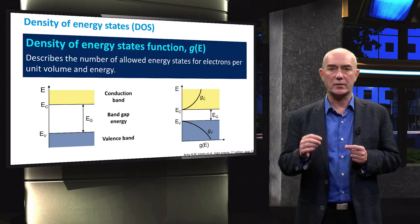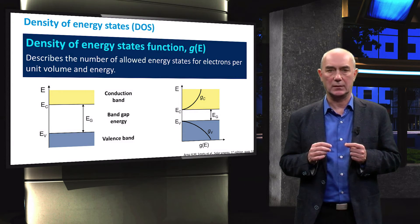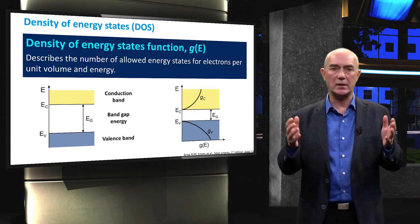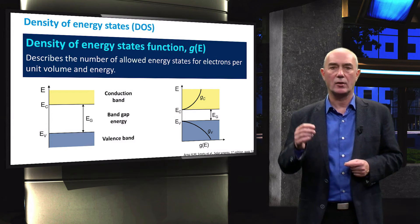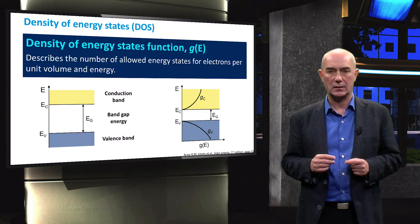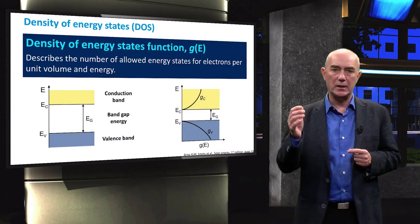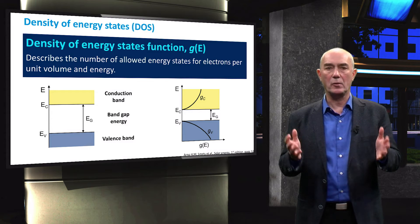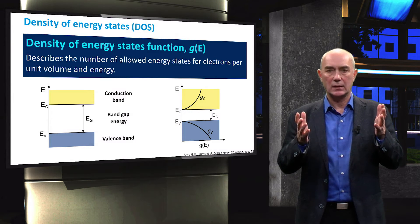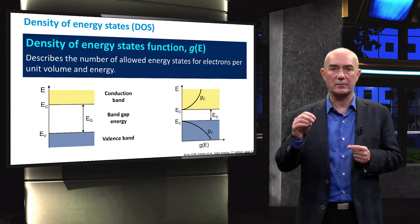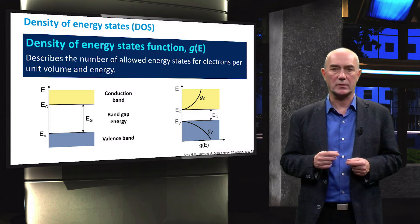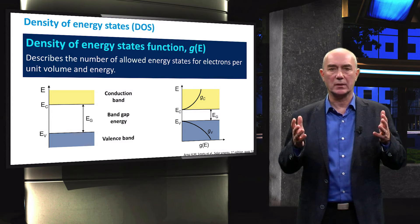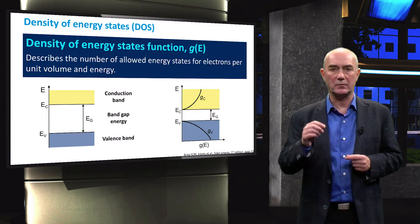Jc represents the density of states in the conduction band. The conduction band represents energy states of mobile electrons. Jv, on the other hand, represents the density of states of holes in the valence band. Holes essentially occupy the states in the valence band of missing electrons — the electrons that have been excited to the conduction band. You will learn much more about holes in future videos.